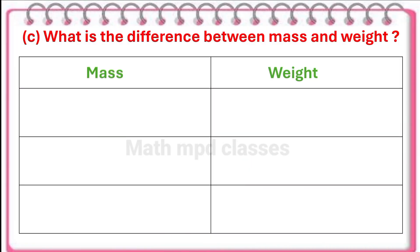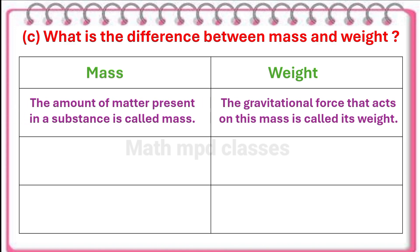Next question: what is the difference between mass and weight? Answer, first point: the amount of matter present in the substance is called mass, and the gravitational force that acts on this mass is called its weight.